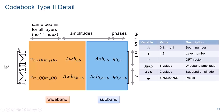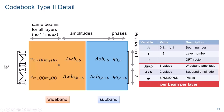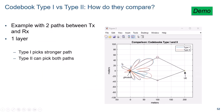In codebook type 2, there are two parts to the summation: the orange wideband part and the blue subband part. The first term in orange is the DFT vectors, which do not depend on the layer, meaning all layers use the same DFT vector. The second part is the set of relative amplitudes for each beam and each layer. The second term in blue is comprised of a relative amplitude between subbands and the phases per subband.